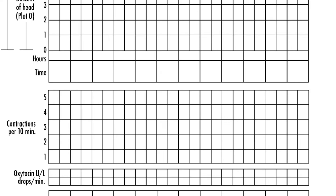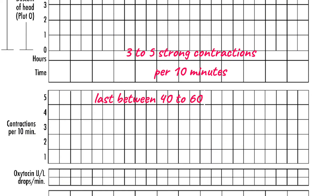Now let's look at how to plot uterine contractions. Uterine contractions are one of the key parameters we check for to ensure a good outcome of labor. We do this by resting our palms gently on the fundus of the uterus and feeling for contractions. We want contractions to be regular, occurring 3 to 5 times every 10 minutes, and strong — lasting between 40 to 60 seconds.